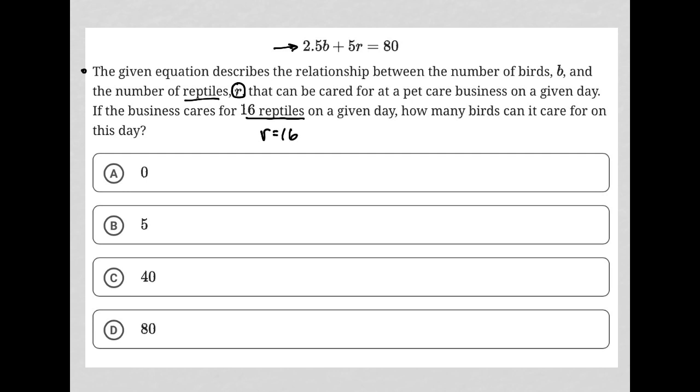How many birds can it care for on this day? So b equals question mark. That's basically what we're being asked for. We have this equation here. So this becomes a simple plug-in information from question strategy.